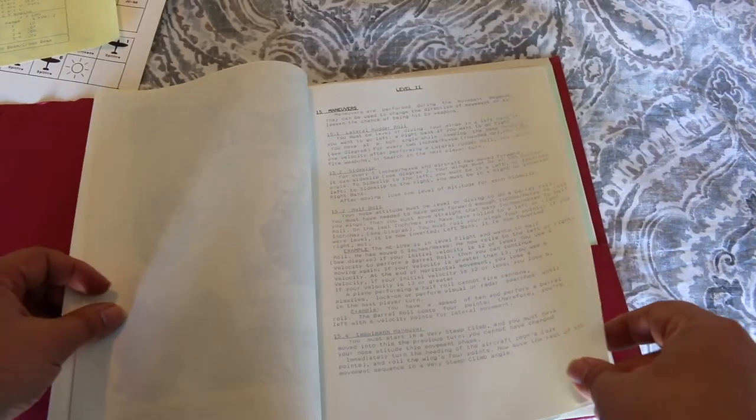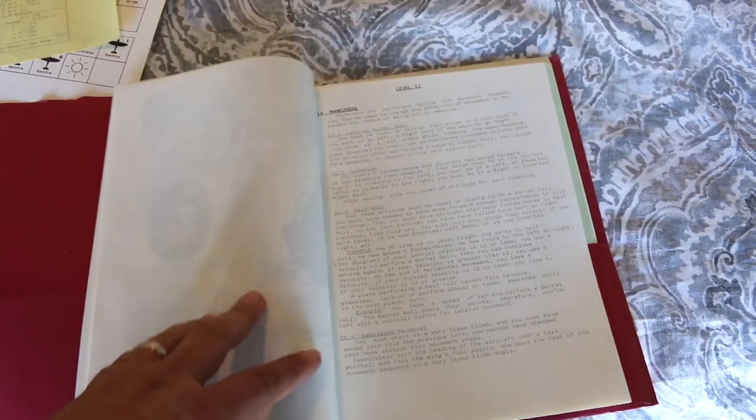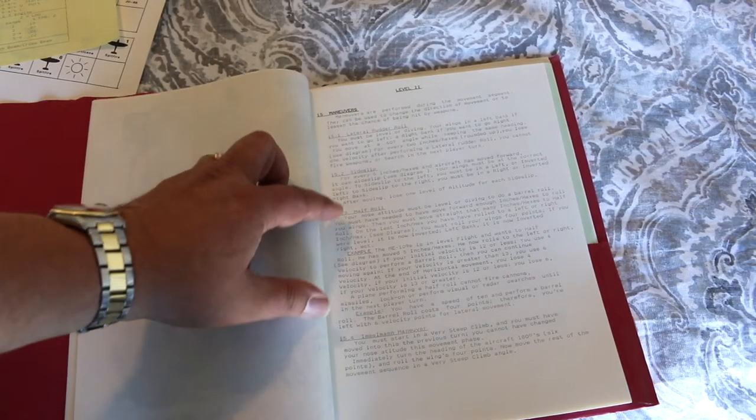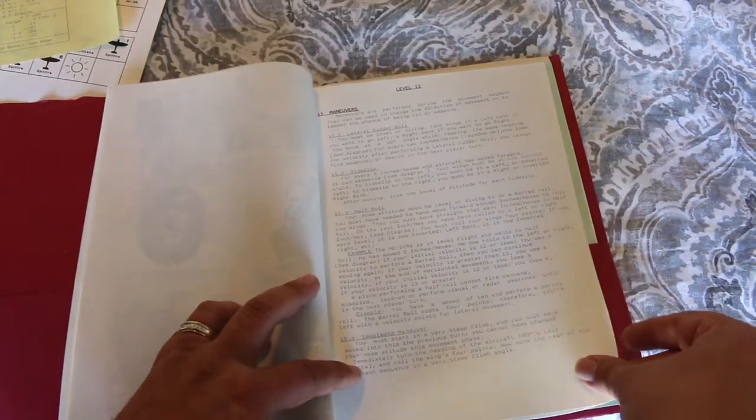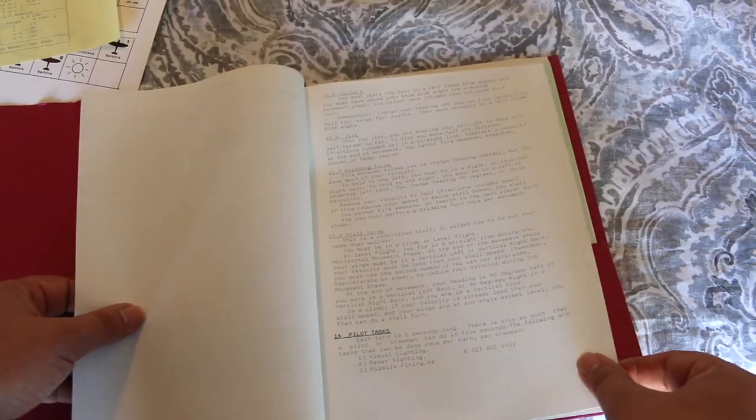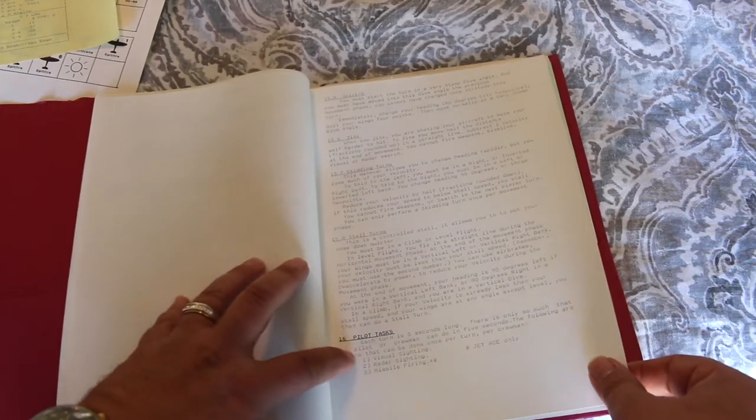Maneuvers, page 13. So you have like, one thing I like is this has real maneuvers. This has lateral rudder rolls, side slips, half rolls, immelmanns, split S's, skidding turns, jinking, stall turns, all sorts of stuff. So this is really cool.